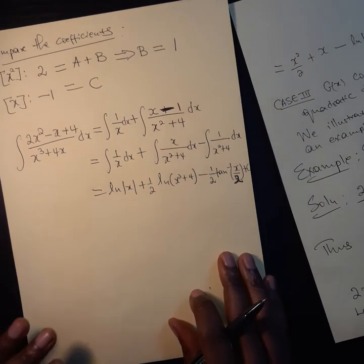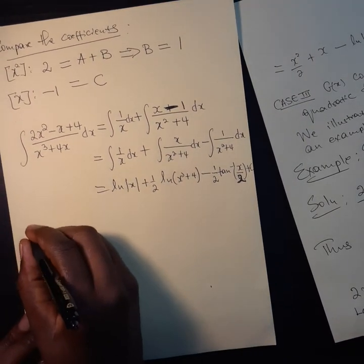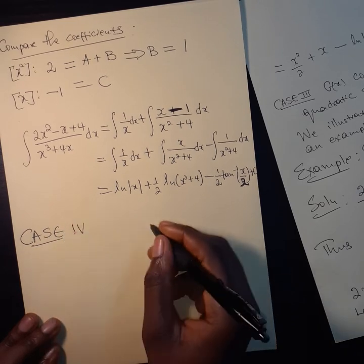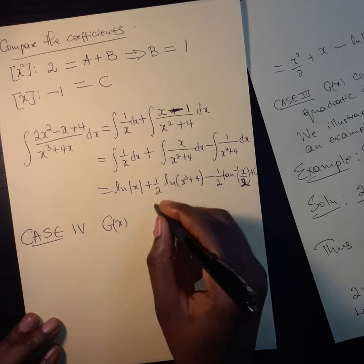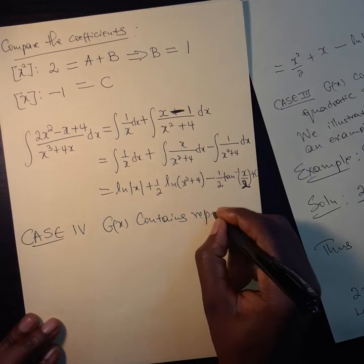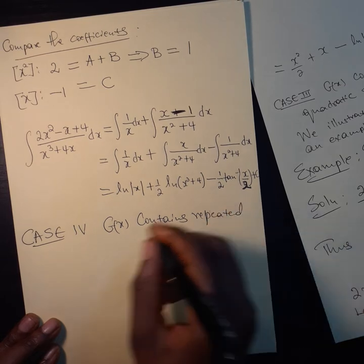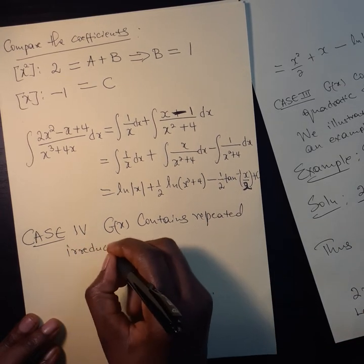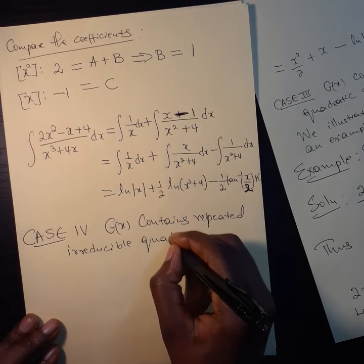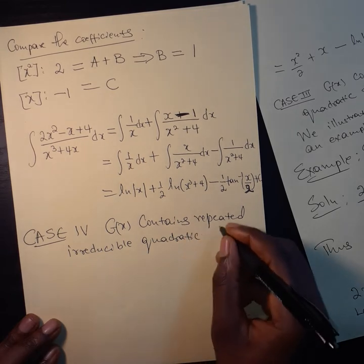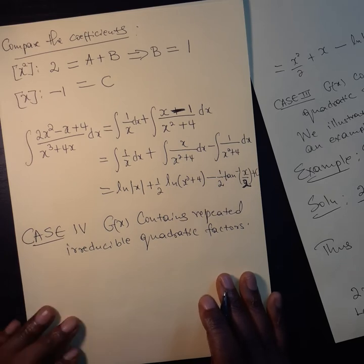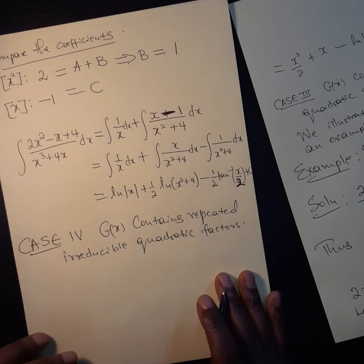Finally, we look at Case 4: where g of x contains repeated irreducible quadratic factors. Again, we illustrate the decomposition using an example.